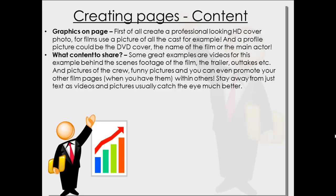So what content to share? Some great examples are videos — for this example, behind the scenes footage of the film, the trailer, the outtakes, all that kind of stuff that not many people are going to get from different pages. You need to be unique and find good videos, and pictures of the crew, funny pictures, maybe a bit of background information on different actors, etc. You can even promote your other film pages within others. The great thing about this strategy is you can make a load of different film pages and use Hootsuite to manage all of this. Stay away from text — videos and pictures catch the eye better and will work really well.